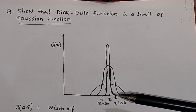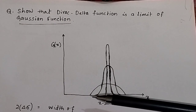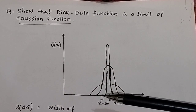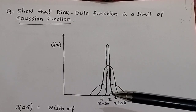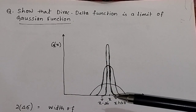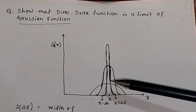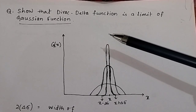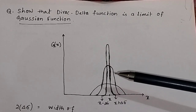So if the width of the Gaussian function tends to 0, you can see that this Gaussian function has more width, this one has decreasing width, and the third Gaussian function has further decreasing width. As the width tends to 0, the value of the Gaussian function g(x) tends to infinity.